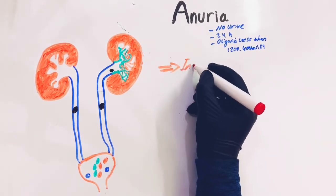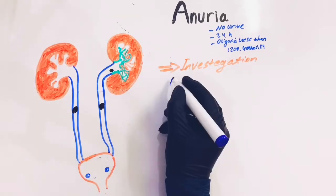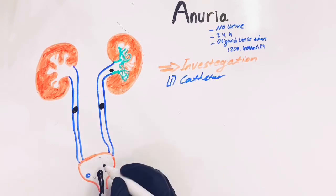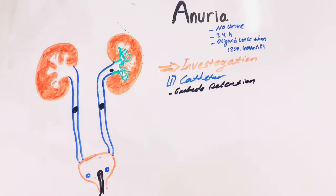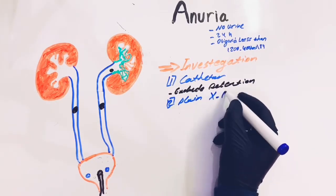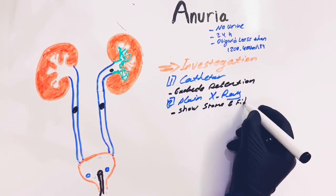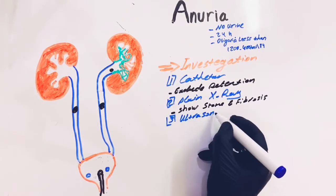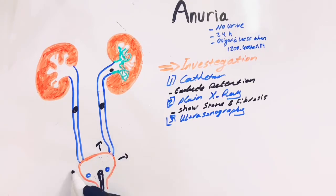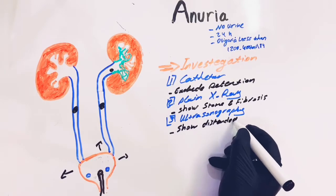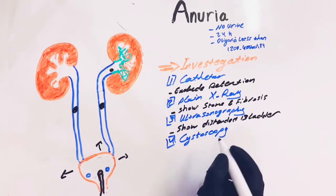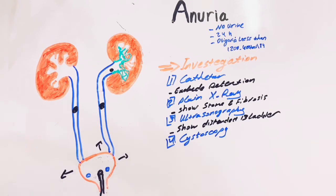For the investigation, we introduce a catheter to the urinary bladder to exclude acute retention of urine. We do a plain X-ray to see if there are any stones or fibrosis. Ultrasonography is used to show a distended bladder. Cystoscopy is performed to see if there is an impacted stone in the orifice or if there is a congested hemorrhagic ureteric meatal orifice in the intramural part of the bladder.